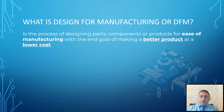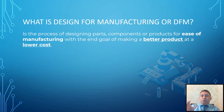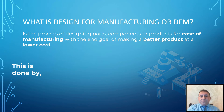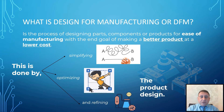Design for manufacturing is a process of designing a part, component, or product for ease of manufacturing. We are at the design stage, but our target is manufacturing — that's why it's called design for manufacturing. We want to make manufacturing easy, make parts of good quality with lower price. To do this, we have to simplify, optimize, and refine the product design.